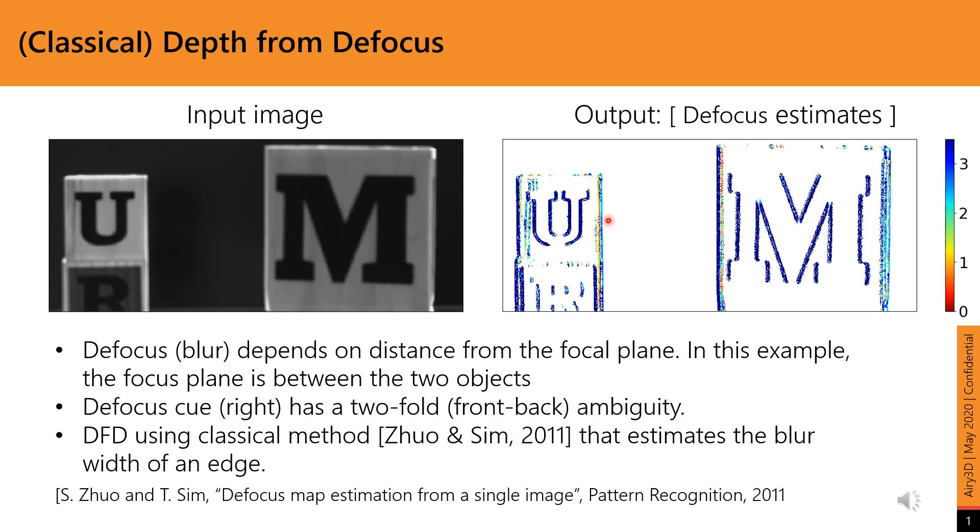That is, there are two depth planes, one behind the plane of focus, and another in front of it that will produce the same defocus blur. This is because the blurring kernel is symmetric.